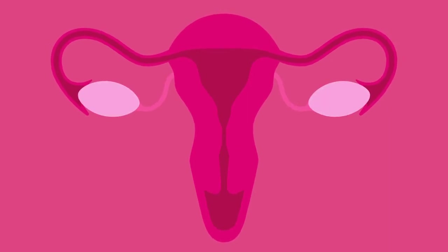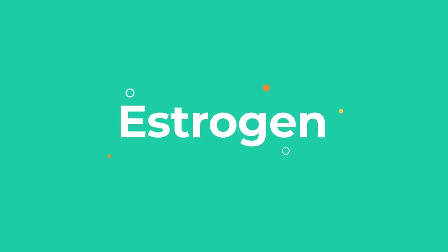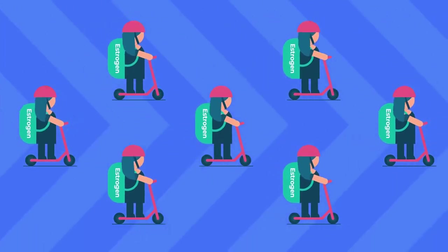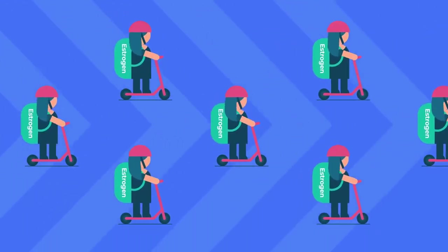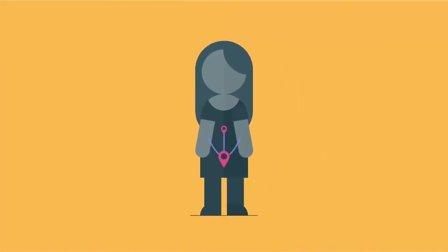At puberty, the ovaries start to make the hormone estrogen. A hormone is made up of chemical messengers produced in one part of the body that affects other parts of the body.